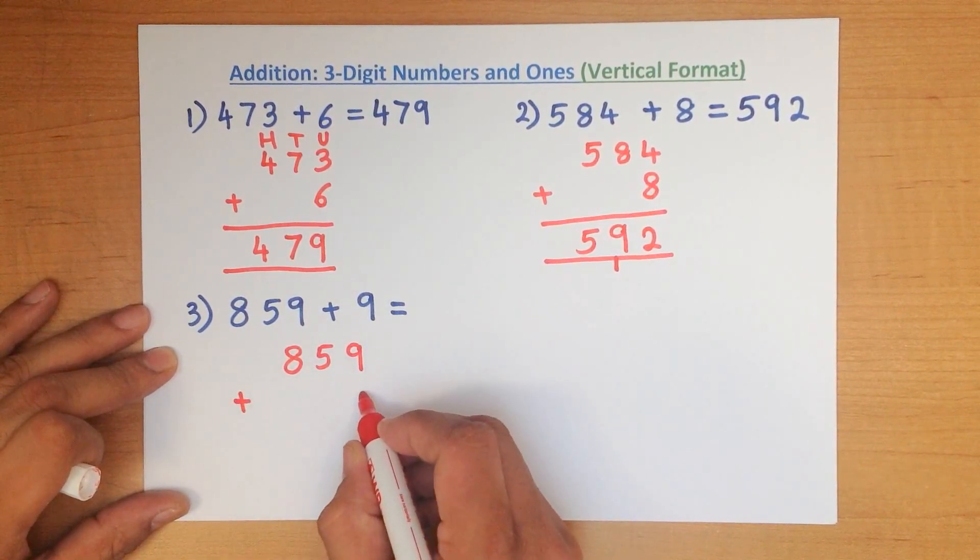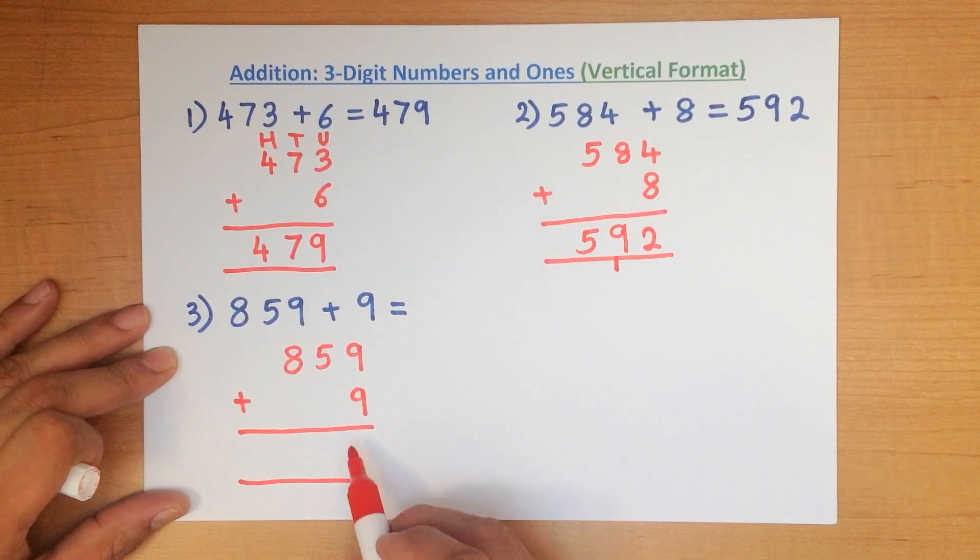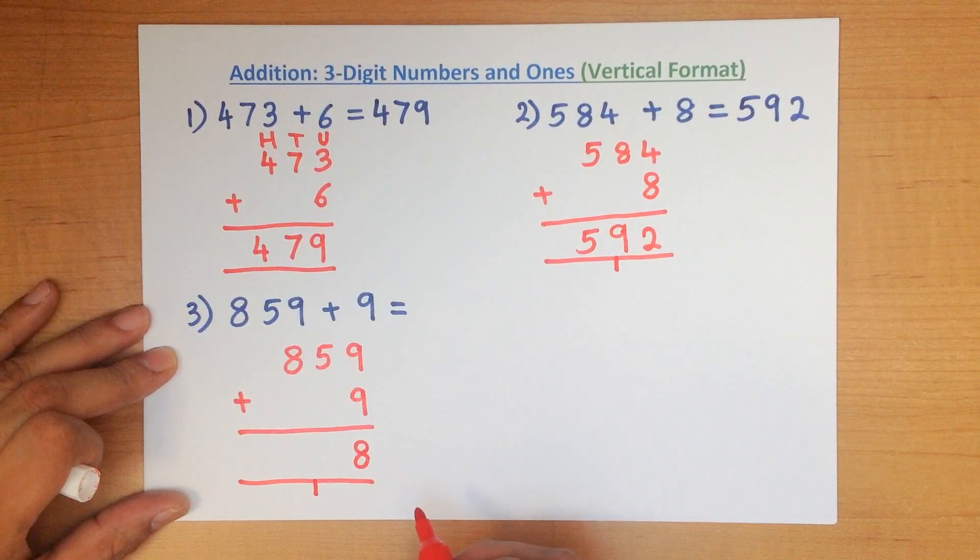9 plus 9 is? 18. And we write it down like this. 1 and the 8.